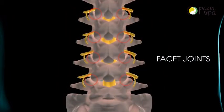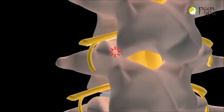Facet joints are little joints situated throughout the spinal column. Pain signals from facet joints are carried by small nerves called the medial branches.